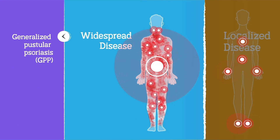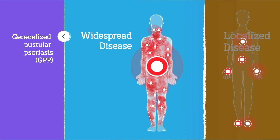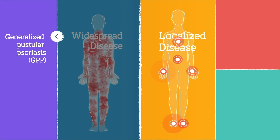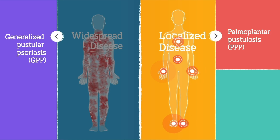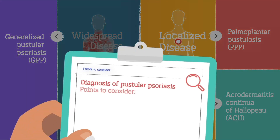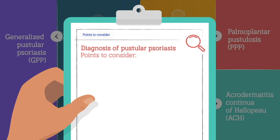Generalized pustular psoriasis, or GPP, presents as widespread disease in many patients, but in other patients it can be confined to certain areas of the body. Localized forms of pustular psoriasis include palmoplantar pustulosis, or PPP, and acrodermatitis continua of Hallopeau, or ACH.